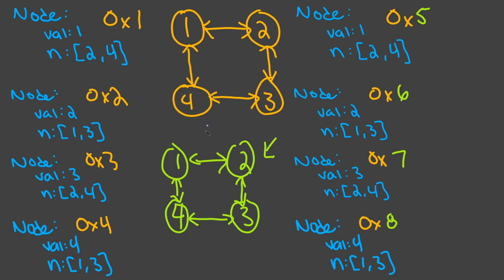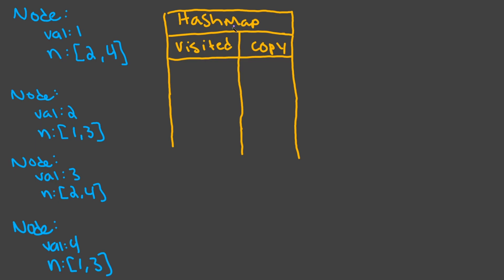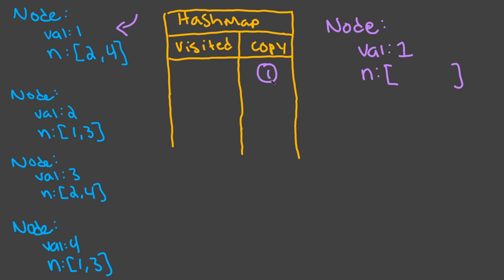Now that we understand what the problem is asking, let's get into the solution. To start, I've initialized a HashMap — it's currently empty. What we're going to do with the HashMap is keep track of the visited nodes from the original list and also store the copy we've made. Let's say we start at this node with value 1. The first thing we want to do is copy this node — create a new node object with value 1 and an empty neighbors list.